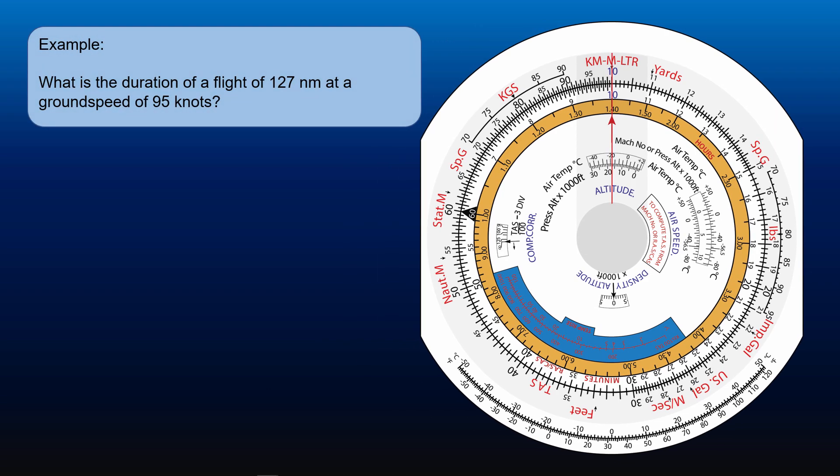For example, what is the duration of a flight of 127 nautical miles at a ground speed of 95 knots? First step, approximation. 95 knots mean 95 nautical miles in an hour. Thus, to travel 127 nautical miles we will take between 1 and 2 hours to cover the distance.